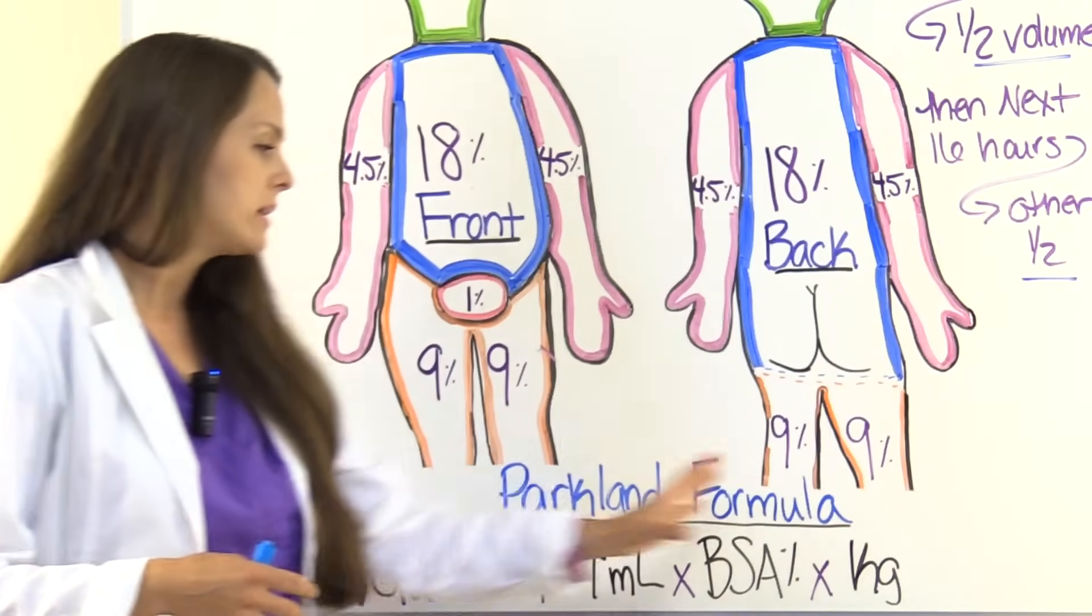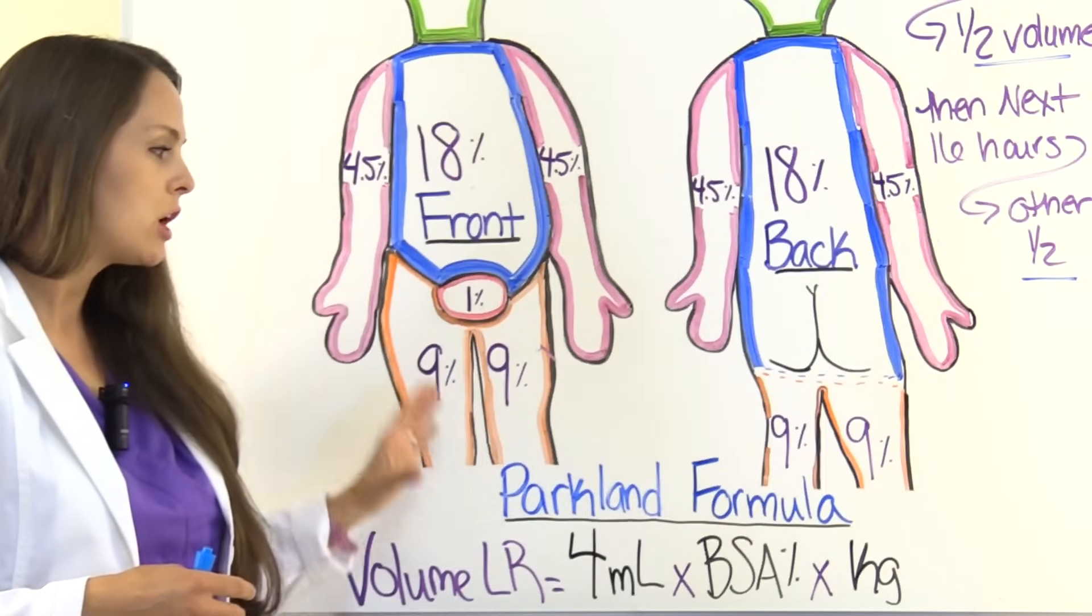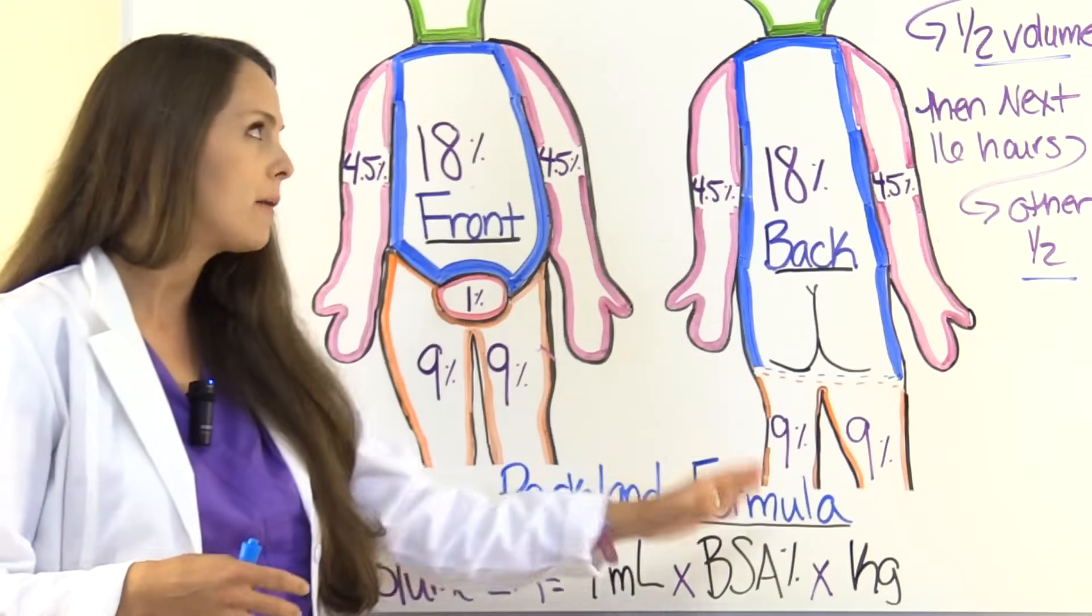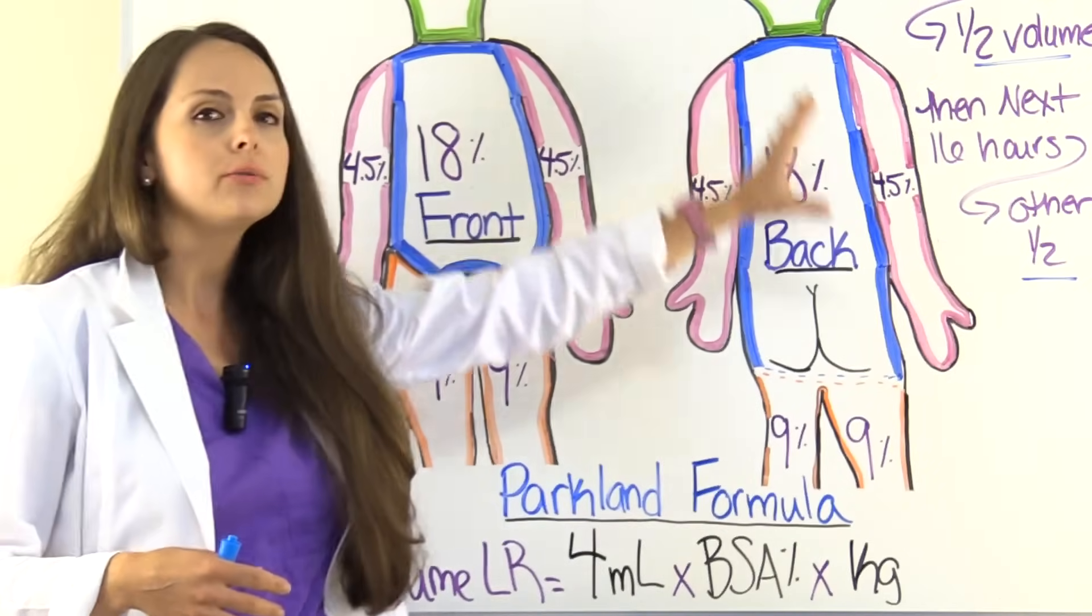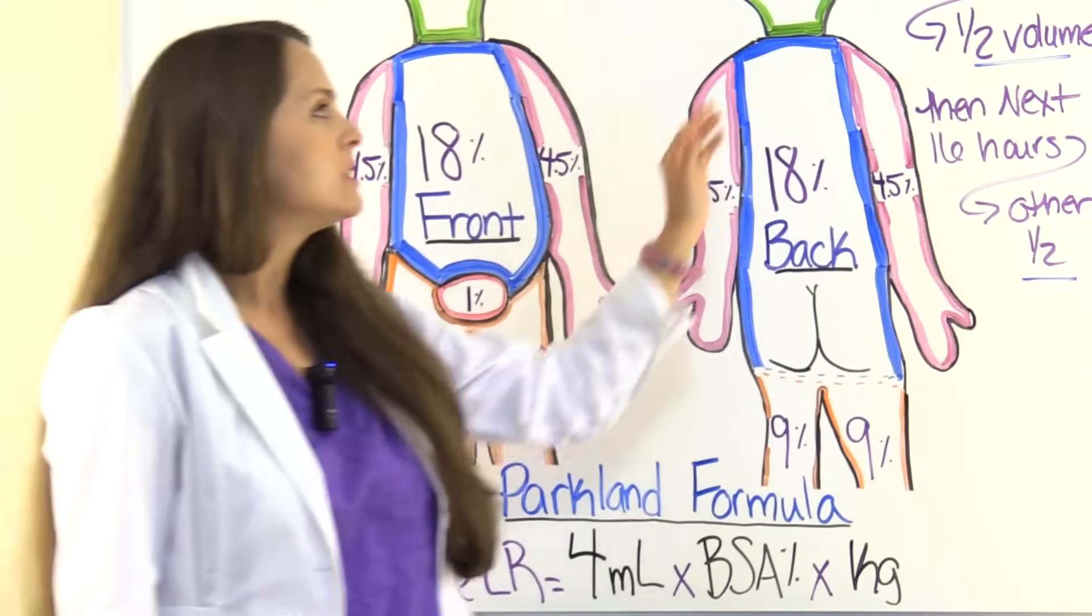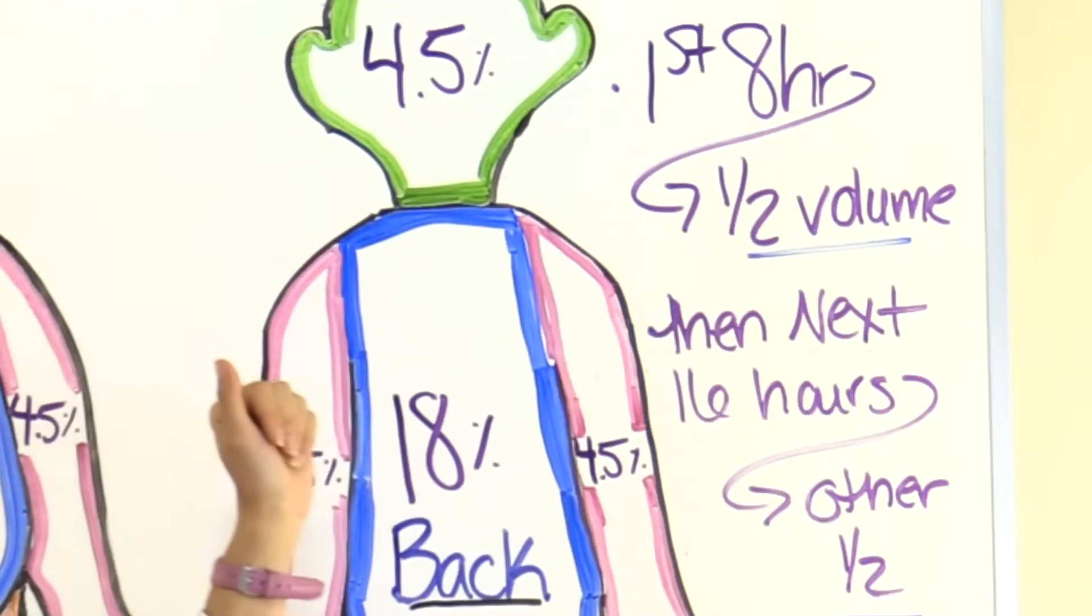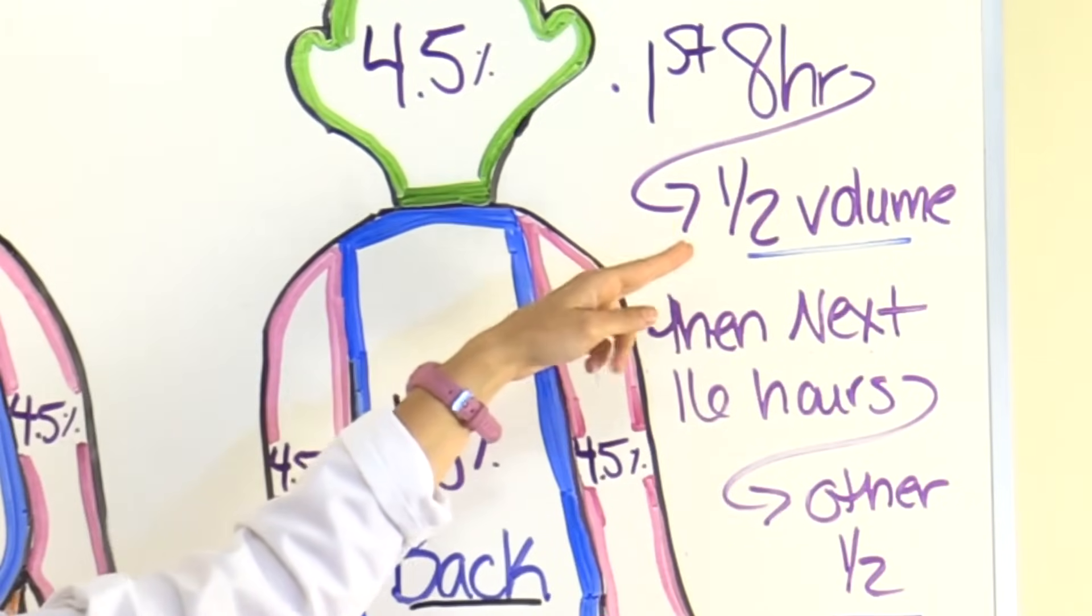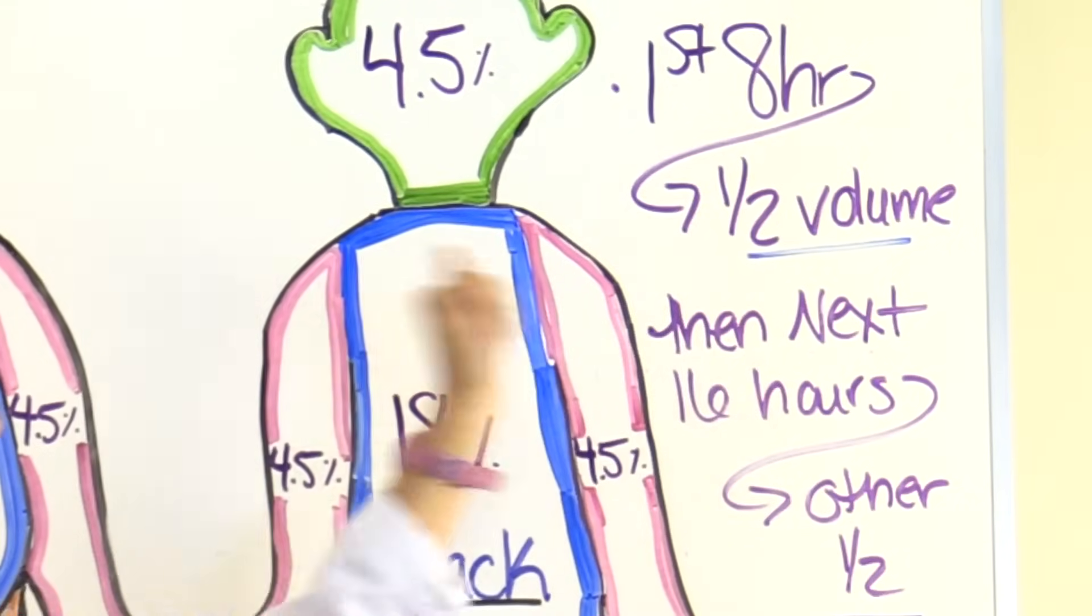So it's important we calculate with this formula so we can determine based on how bad their burn, how much they weigh, how much fluid they're going to need over the next 24 hours. So you get your total, and then during the first 8 hours, the patient will receive half that volume total. Then over the next 16 hours, they'll receive the other half.